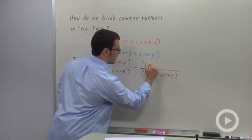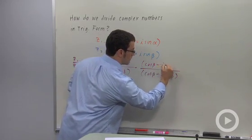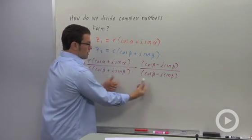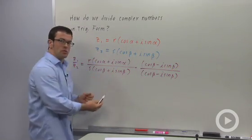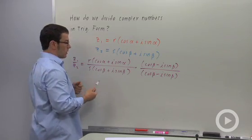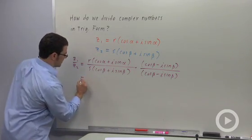I have to multiply the top and bottom. And this product, because it'll end up giving me a difference of squares, will actually end up being a real number. Let's see that.